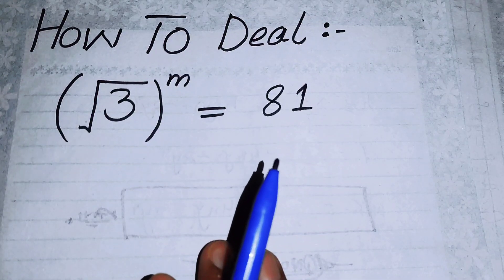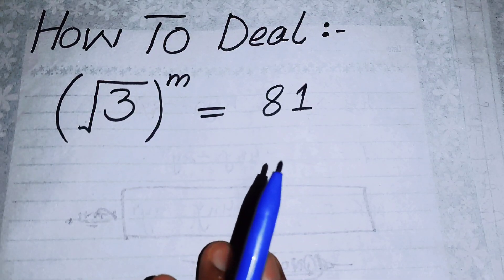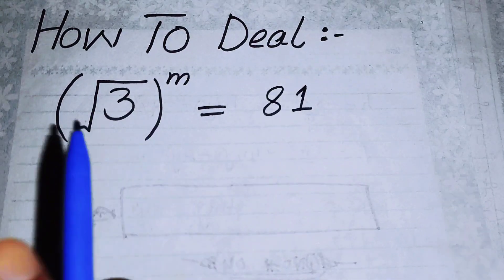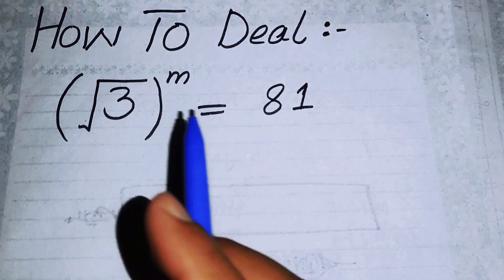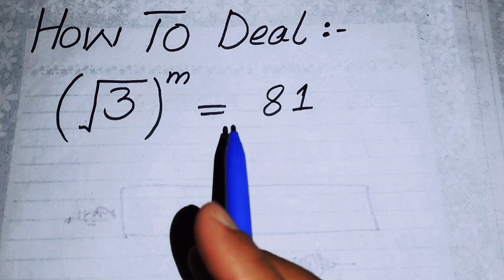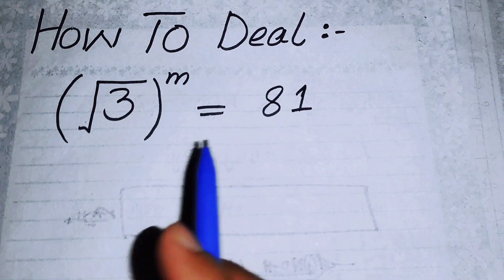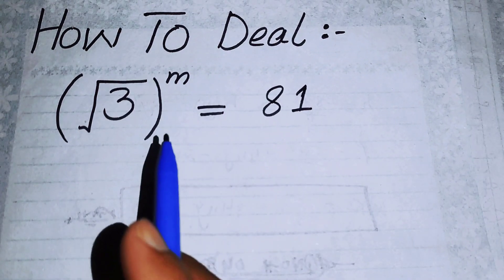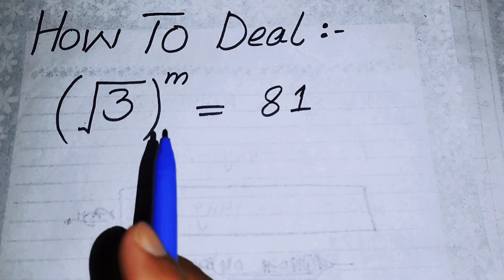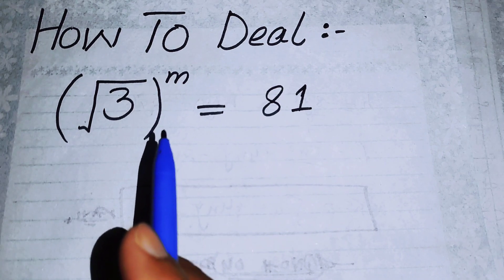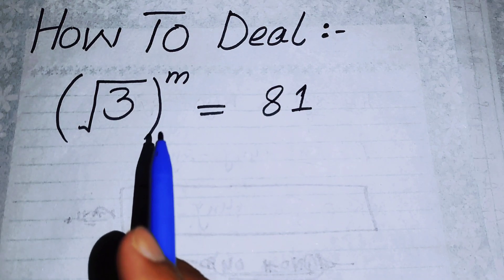Hello everyone, welcome back to the Map of Mathematics. Today we will solve: square root of 3 to the power of m is equal to 81, and we will find the value of m.